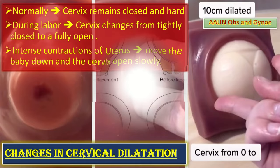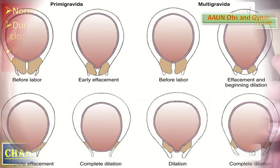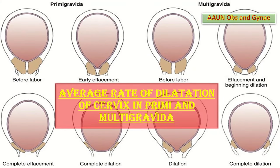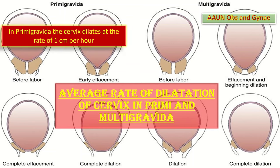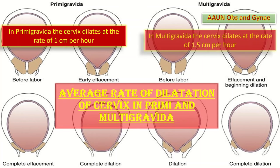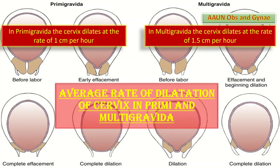The average rate of dilatation differs between primigravida and multigravida. In primigravida, the cervix will dilate approximately one centimeter per hour. In multigravida, the cervix dilates at a rate of 1.5 centimeters per hour.